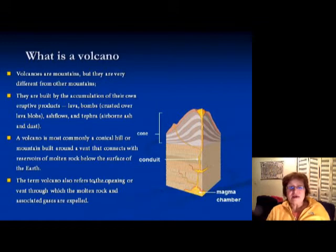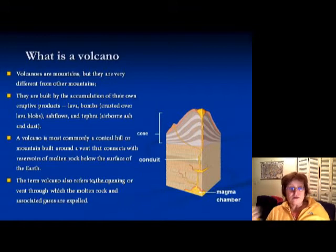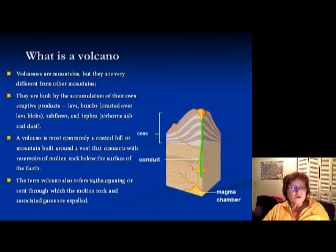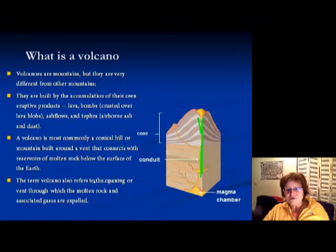The eruptive products include lava, volcanic ash, bombs, and tephra, which is airborne ash and dust. Volcanoes are most likely going to be conical hills or mountains, and they build around the vent — the area along which magma is coming up. The term 'volcano' also refers to the opening or vent through which molten rock and associated gases are expelled, including the crater where lava comes out.